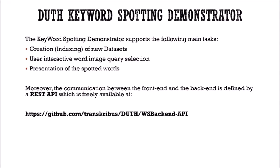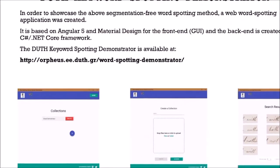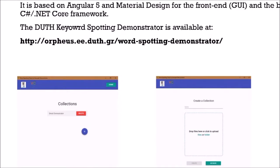We have a REST API available that can be used to connect a back-end and front-end architecture to use this system. There is also a demonstrator, and we plan to integrate it into Transkribus. Currently you can access it — I will demonstrate it for you now. You can use it simultaneously, but it is not really a problem.